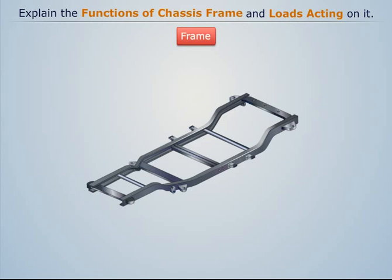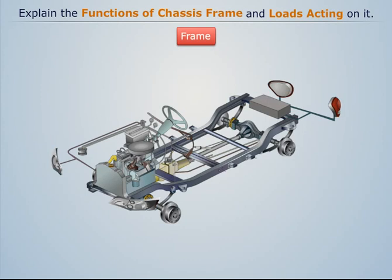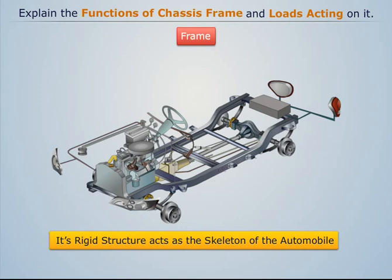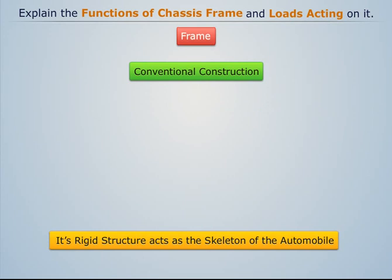The frame, or underbody, is the main part of the chassis on which the remaining parts of the chassis are mounted. Its rigid structure acts as the skeleton of the automobile to hold all the major parts together. The mounting of the chassis parts can be done in two different ways. The first is conventional construction, in which a separate frame is used on which all the components are fitted.